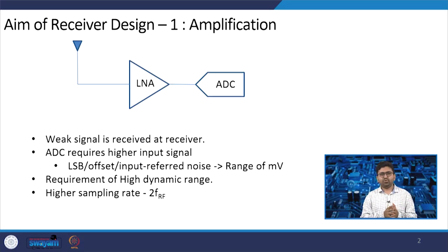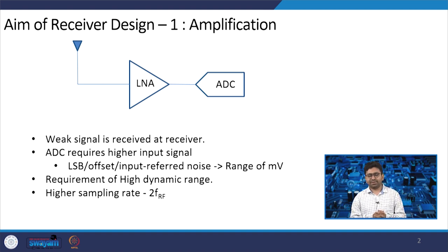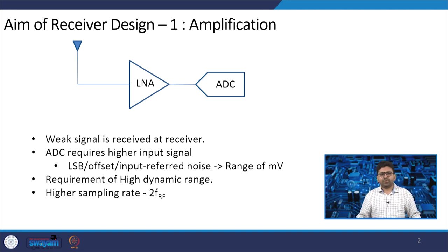We will start from the receiver architecture because we have a very small signal that we want to recover, and then we will move to the transmitter architecture. Both transmitter and receiver architectures will be covered in this module. Before going to receiver architecture, let us consider what the goals of receiver design are. For example, your incoming signal might be very small, around minus 90 dBm.